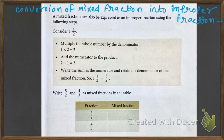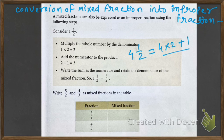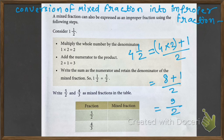Let me give you another example. Suppose you have the number 4 and 1 upon 2. First, you multiply 4 by 2, and then you add 1, divided by 2. So 4 into 2 will become 8, plus 1 divided by 2. The answer is 9 by 2.